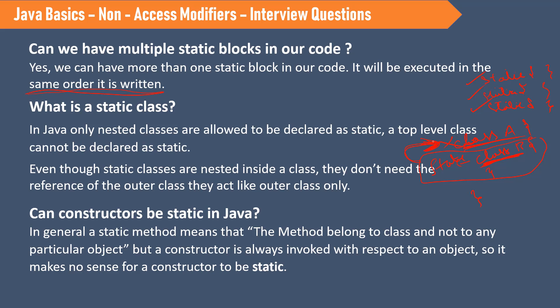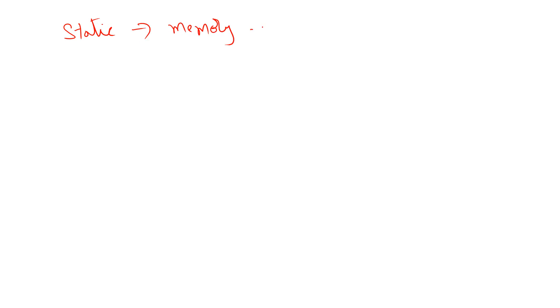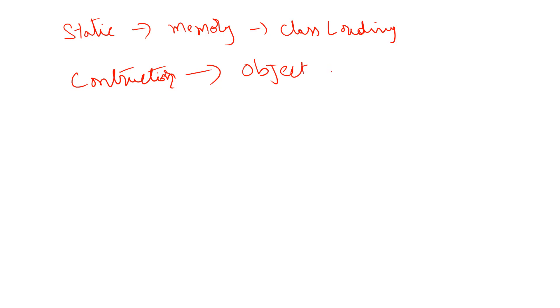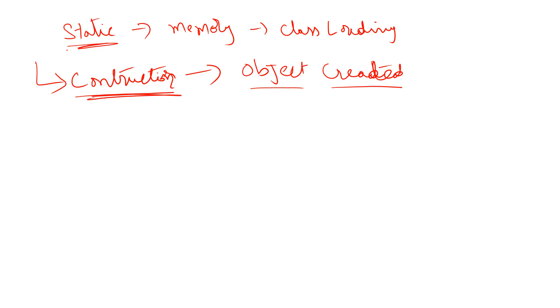Can constructors be static in Java? Static means memory is allocated whenever the class is loaded into memory. But a constructor is called whenever an object is created. When something is static, memory is allocated during class loading. A constructor is called after the class is loaded, only when an object is created. So there is no point in assigning a static keyword to a constructor.